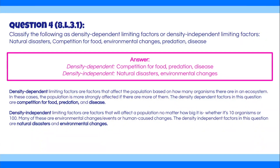Density-independent limiting factors affect a population regardless of its size, whether it's 10 or 100 organisms. Many are environmental events or human-caused changes. The density-independent factors in this question are natural disasters and environmental changes. Natural disasters affect any population in their path regardless of size. Environmental changes — such as deforestation, increased toxin levels, and climate changes — will also affect any population in their respective areas.